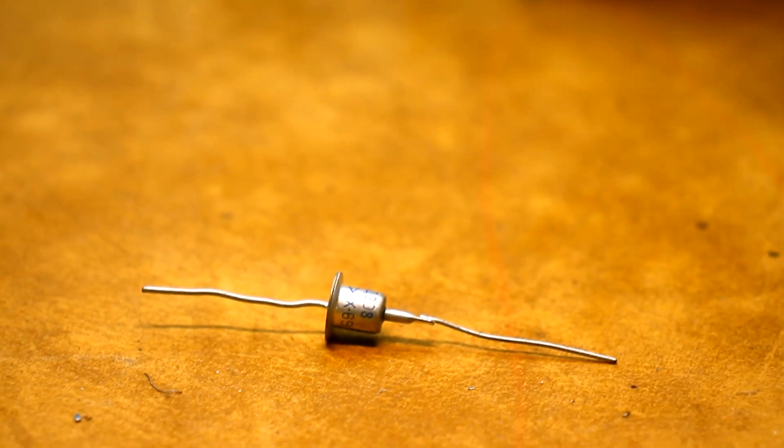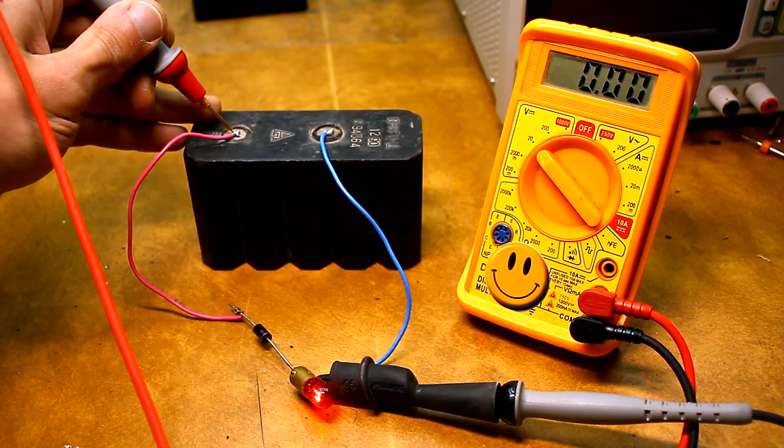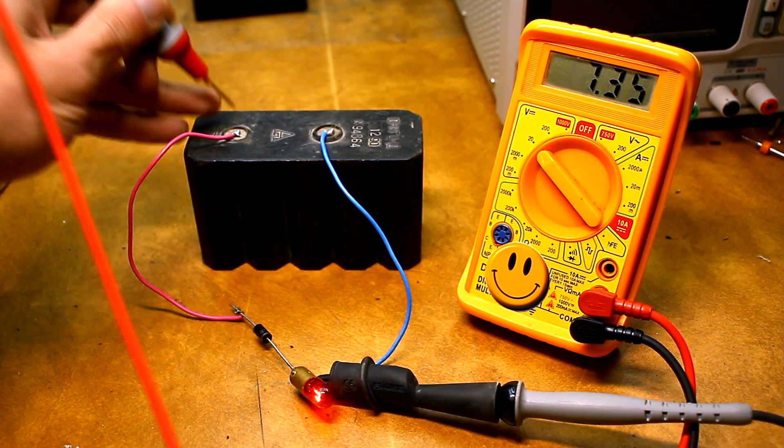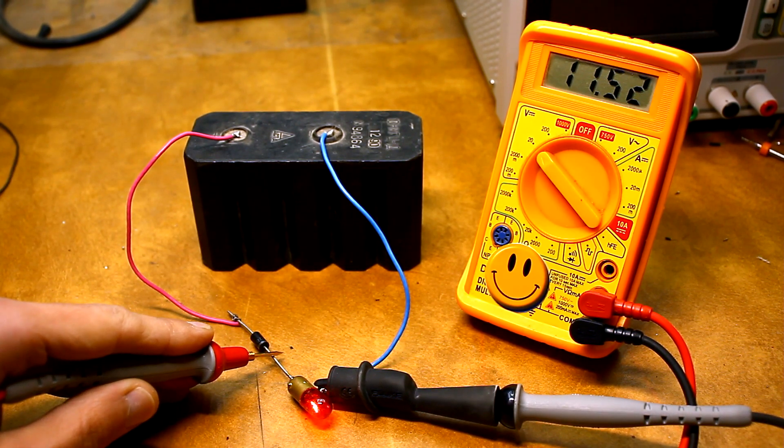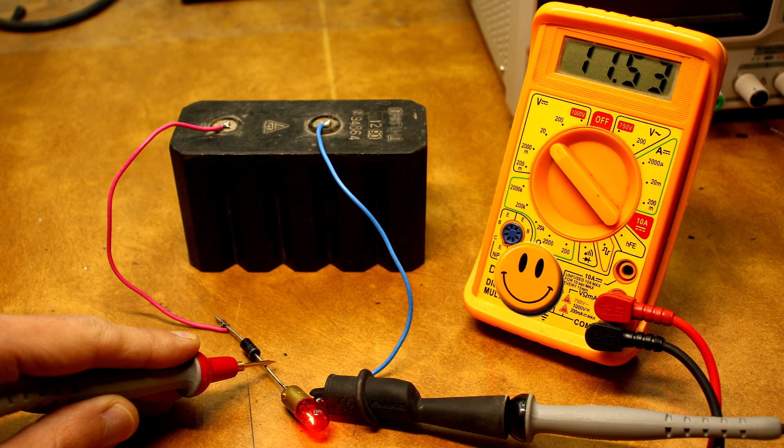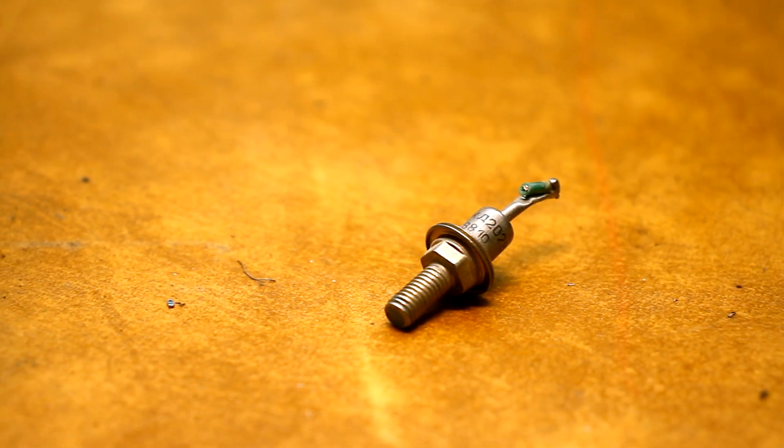That is, if we apply to the anode of the diode a plus from the battery which has a voltage of 12 volts, then relative to the cathode and minus of the battery, we will get a voltage of about 11.3 volts. That is, we lost 0.6 to 0.7 volts on the diode. How can this property be used?